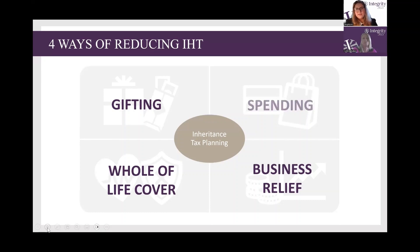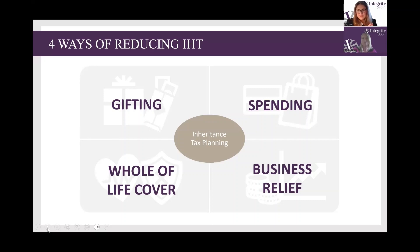Thirdly, there's something called business relief, which was brought in in the 1970s to enable people to pass their small UK companies on to the next generation without paying a huge amount of death duties. We can still benefit from that today by buying shares in small UK companies. If you own assets that qualify for this, you can get inheritance tax at 0% rather than 40%, saving you some inheritance tax.